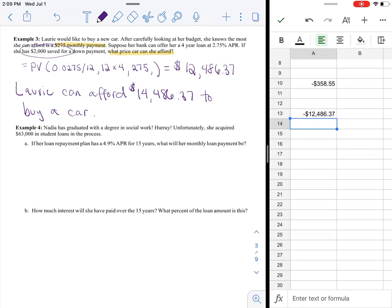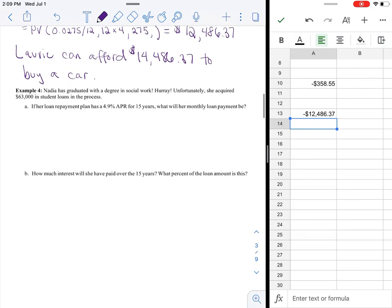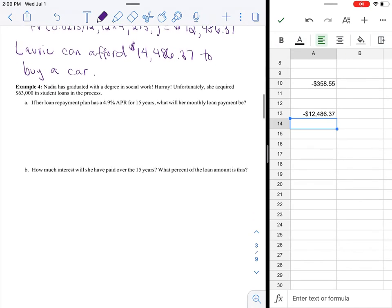Our next example. Nadia has graduated with a degree in social work. Hooray! Unfortunately, she acquired $63,000 in student loans. So part A, if her loan repayment plan has a 4.9% APR for 15 years, what will her monthly loan payment be? That gives it away that you'll use the payment function.